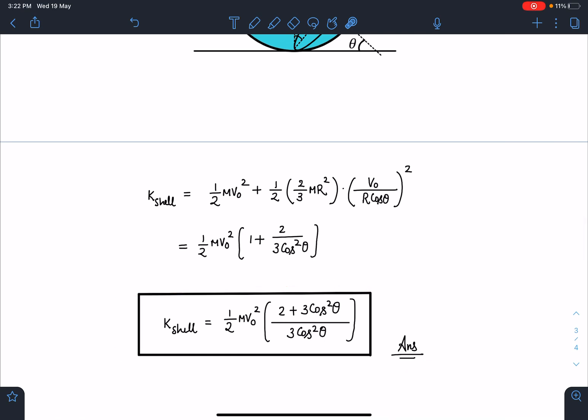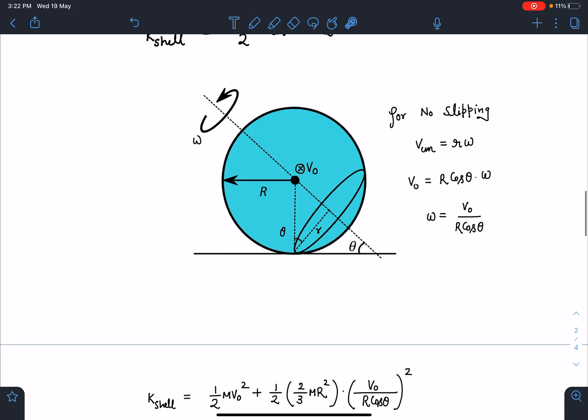On simplifying, the answer is K_shell = ½Mv₀² · (2 + 3cos²θ)/(3cos²θ). This is the final answer for this problem.